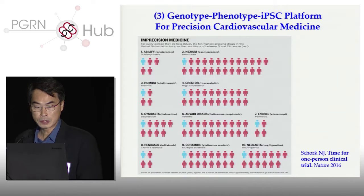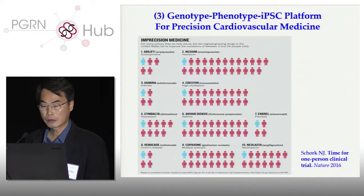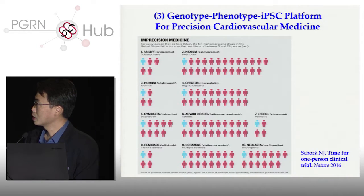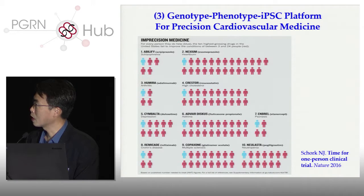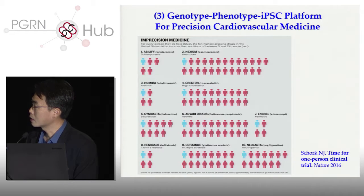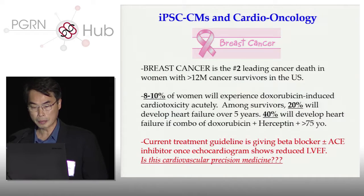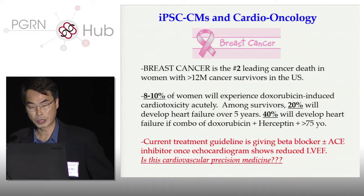The third part of my talk is how we use this genotype-phenotype iPSC platform for precision cardiovascular medicine. This interesting slide shows for the top ten medications used in the U.S., anywhere from three to twenty-four patients who took the medication had essentially no effect at all. This is the reason why the article's title is 'Time for a One-Person Clinical Trial.' I'm going to show how we're thinking about doing this for iPSC cardiomyocytes in cardio-oncology.